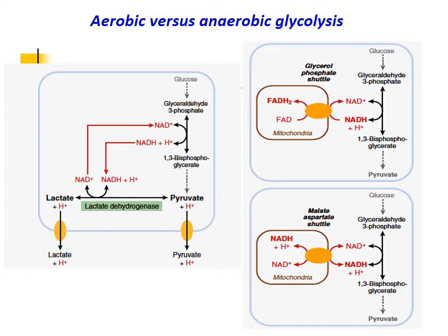In anaerobic conditions, due to prevailing hypoxia, NAD+ regenerated via the electron transport chain is not adequate to continue glycolysis. Alternatively, the cell converts pyruvate to lactate by the action of lactate dehydrogenase. During this process, NADH is converted back to NAD+, which is recycled in the glycolytic pathway to convert glyceraldehyde-3-phosphate to 1,3-bisphosphoglycerate.